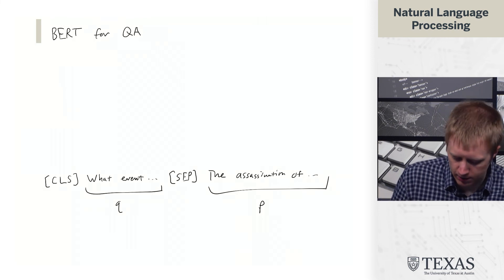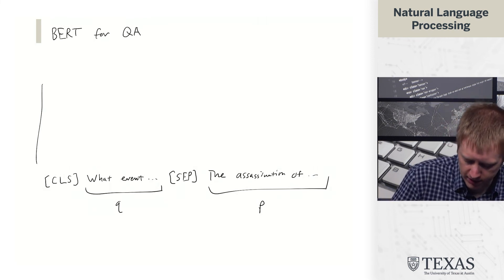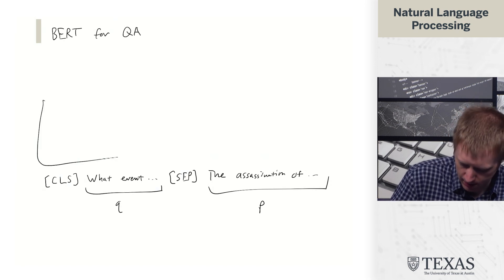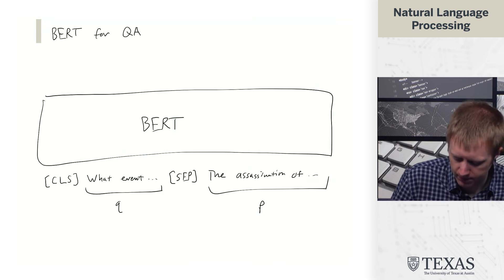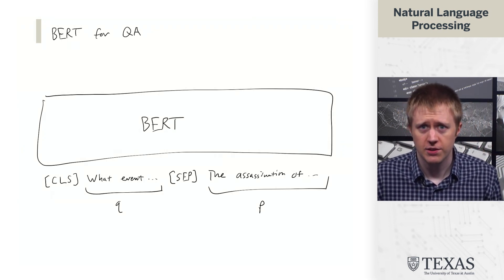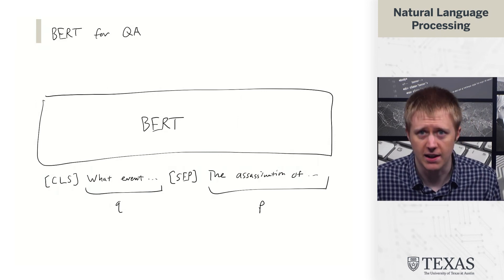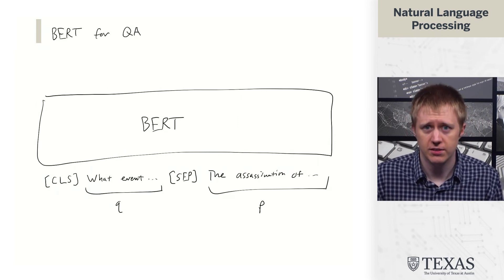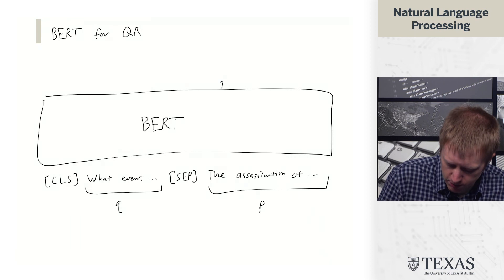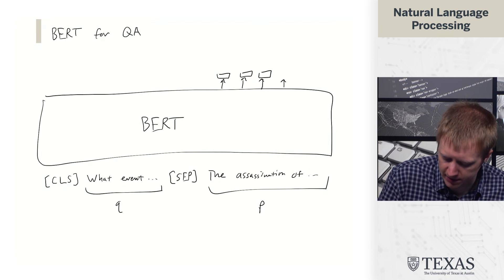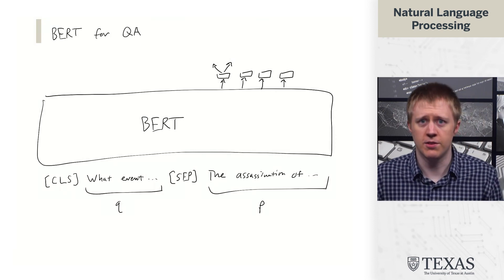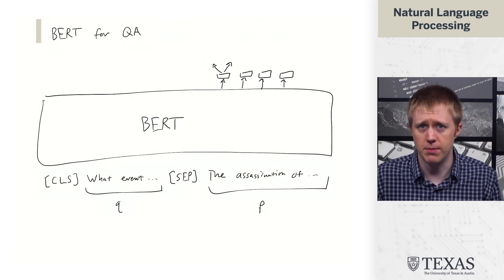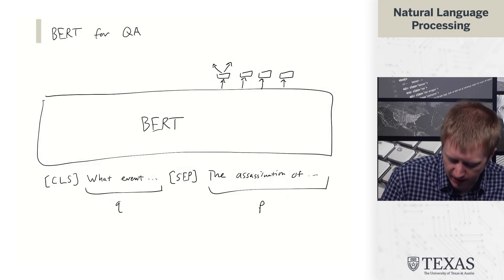We feed this into BERT. As a span extraction task, we are trying to predict a start and end distribution. What we do is take the output BERT vectors at each position in the passage and put these through two small feed-forward networks, or essentially just a matrix multiply, to compute a score.